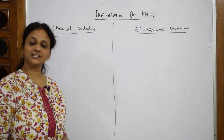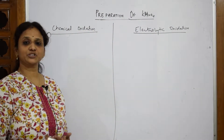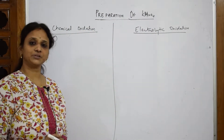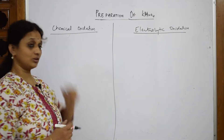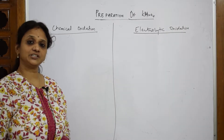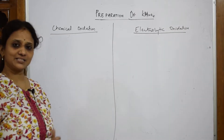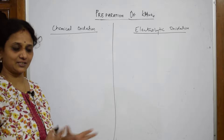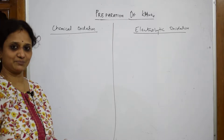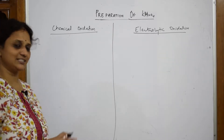Let us come back and learn the next preparation methods of potassium permanganate. In the chemical oxidation method, I will just write a simple equation — please memorize it, it is very easy actually.